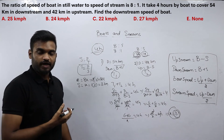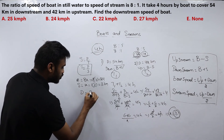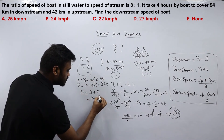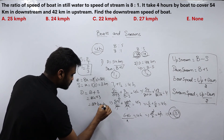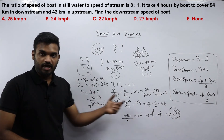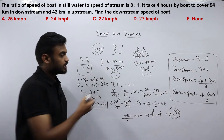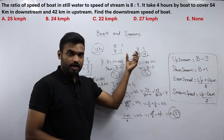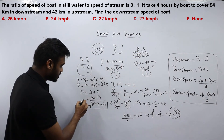They ask for the downstream speed of the boat. Downstream = boat speed + stream speed = 24 + 3 = 27 km/h. First find the value of x, then substitute to get the actual boat and stream speeds, and finally compute the downstream speed.